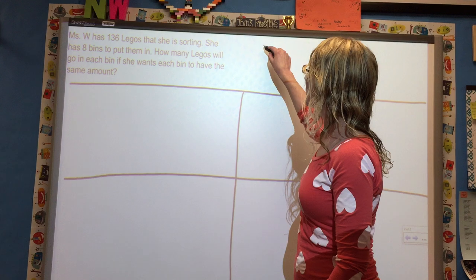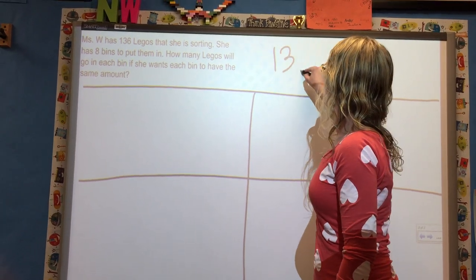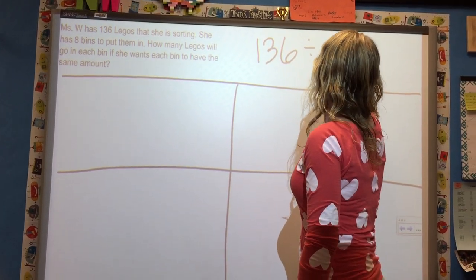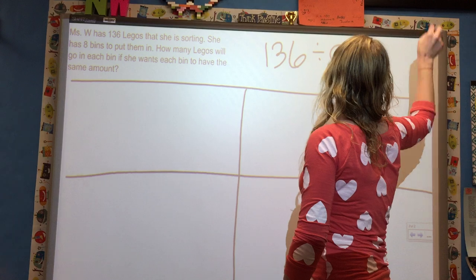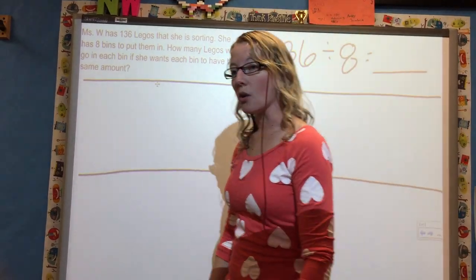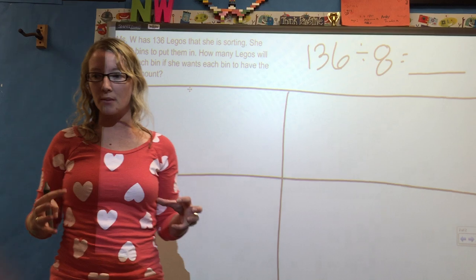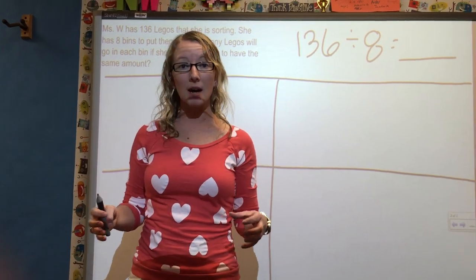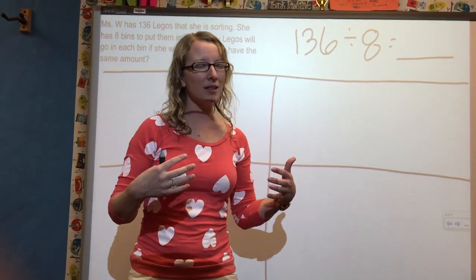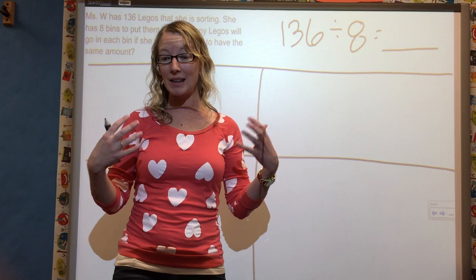Well, we've already discussed we are dividing up these Legos into bins in equal groups. So what kind of a problem is this? Division. So it's going to be 136 divided by 8 equals blank. So we were discussing earlier, too, that if you come up with a problem that's difficult for you, a lot of times we go back to a less sophisticated strategy, maybe an easier strategy.